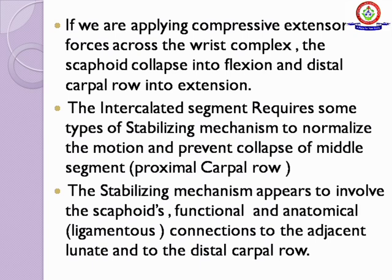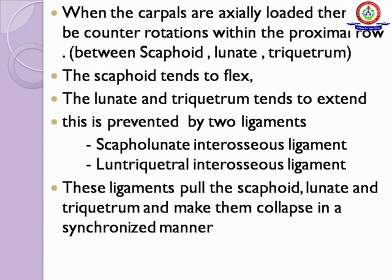The stabilizing mechanism appears to involve the scaphoid's functional and anatomical connections to the adjacent lunate and to the distal carpal row. When the carpals are axially loaded, there will be a counter rotation within the proximal row between scaphoid, lunate, and triquetrum. The scaphoid tends to flex and the lunate and triquetrum tend to extend.